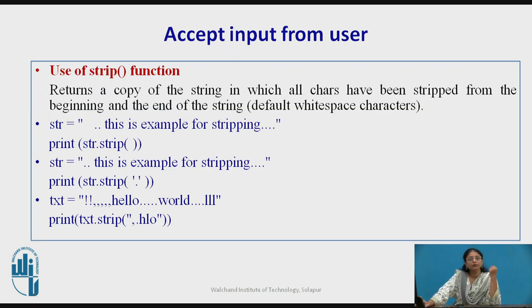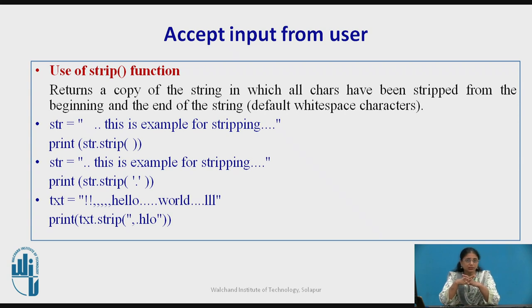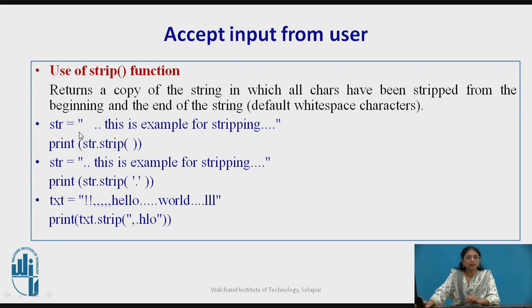Whenever we take user input, we should use some standard functions to keep input in a proper format. The first is the strip function. Strip removes white spaces or unnecessary characters that we do not require — characters the user may have entered that we want to eliminate. It returns a string where all specified characters have been stripped from both ends — the beginning and the end. By default, it removes white space characters.